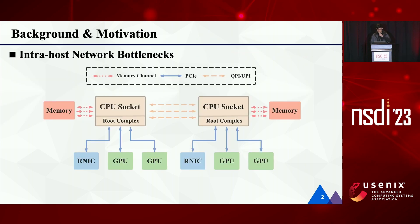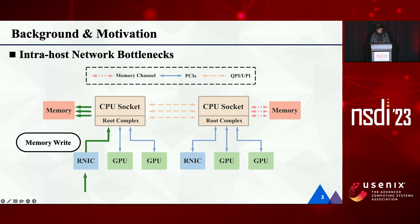First, I will introduce the concept of intra-host network bottlenecks. This is a basic topology of a host network. This host has two CPU sockets and two memory nodes. Each socket has one RDMA NIC and two GPUs. This is a normal process when the R-NIC writes to the CPU memory. There is no intra-host bottleneck, and the R-NIC would reach the line rate.